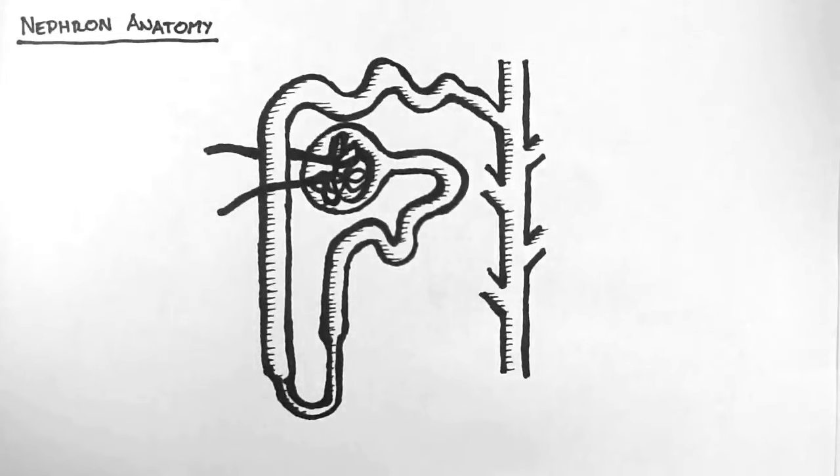Cortical nephrons are superficial and juxtamedullary nephrons are deeper. In fact, they lie next to the medulla, which is the meaning of juxtamedullary.